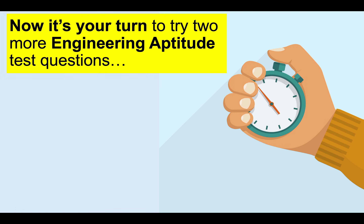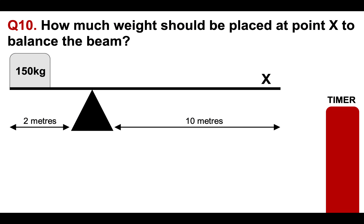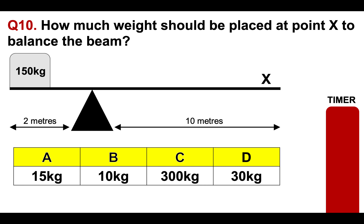Now it's your turn to try two more engineering aptitude test questions. Please put your answers to questions 10 and 11 in the comments section below the video. Question 10: how much weight should be placed at point X to balance the beam? Is it A: 15 kilograms, B: 10 kilograms, C: 300 kilograms, or D: 30 kilograms?